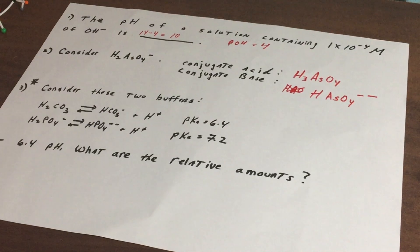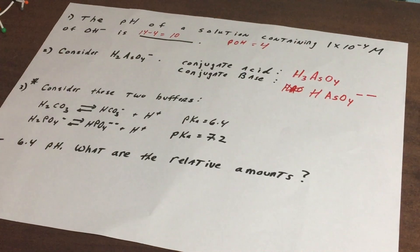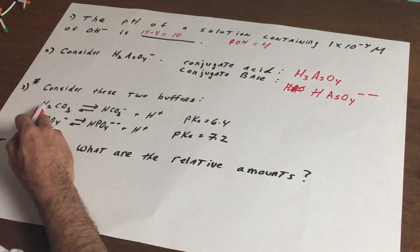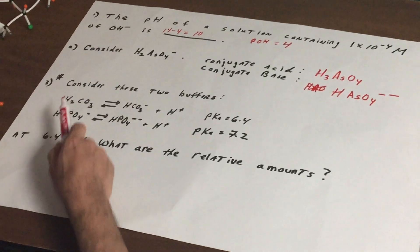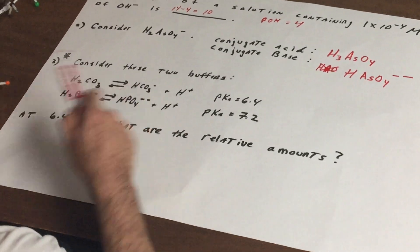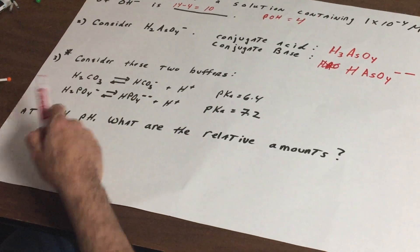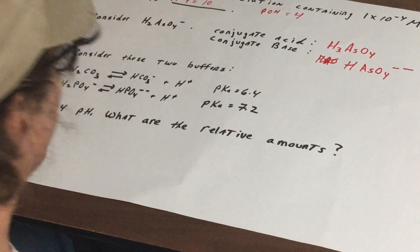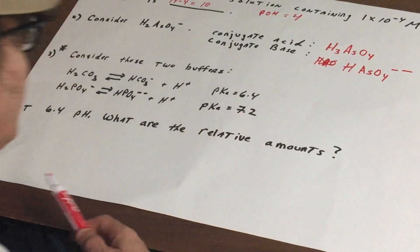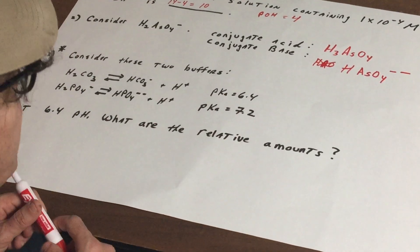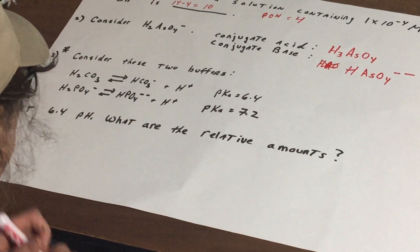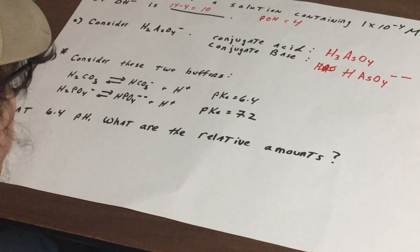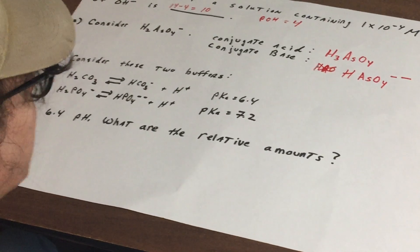Now here's the hard one. I want you to consider two buffers. One I give you this buffer of carbonic acid and the bicarbonate anion, and here you have the dihydrogen phosphate and the monohydrogen phosphate system, and the pKa is given, 6.4 and 7.2 respectively. Now at 6.4, what are the relative amounts?